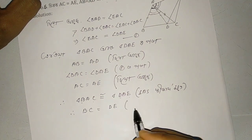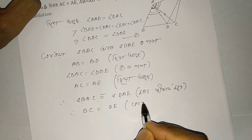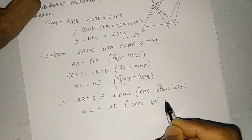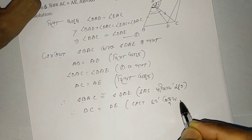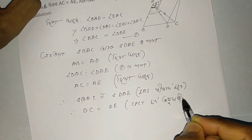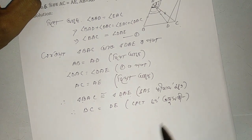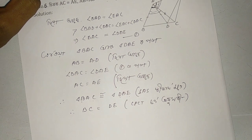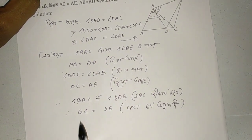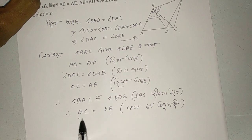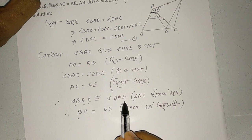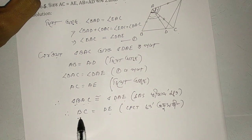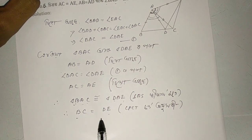By CPCT, BC equal to DE. So we have directly proved that BC equal to DE.